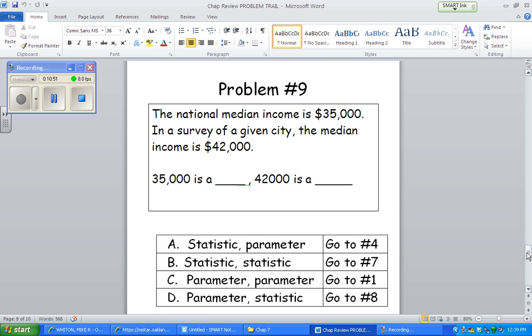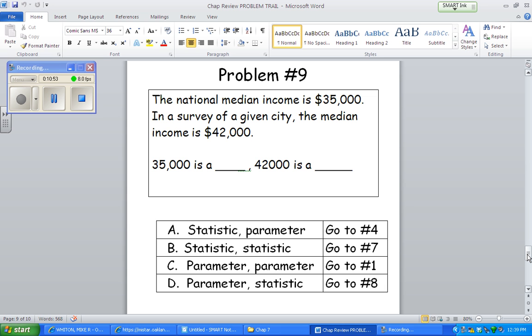Okay, number 9. Another kind of definition thing here. National median income is $35,000. In a survey of a given city, the median income was $42,000. Okay, so here's what I'm thinking. And they're taking a survey. That's a sample. Okay, the $42,000 is describing a sample. Sample starts with S. Statistics starts with S.